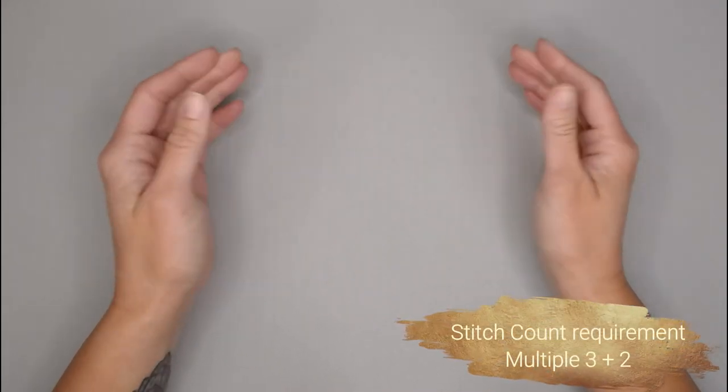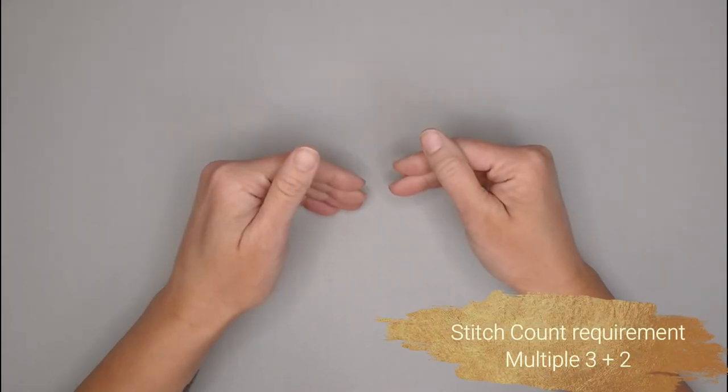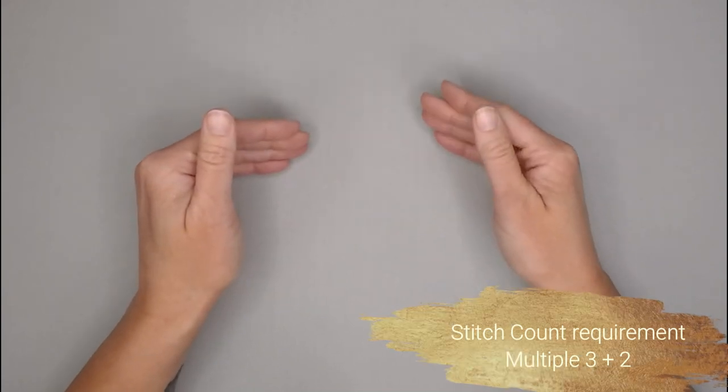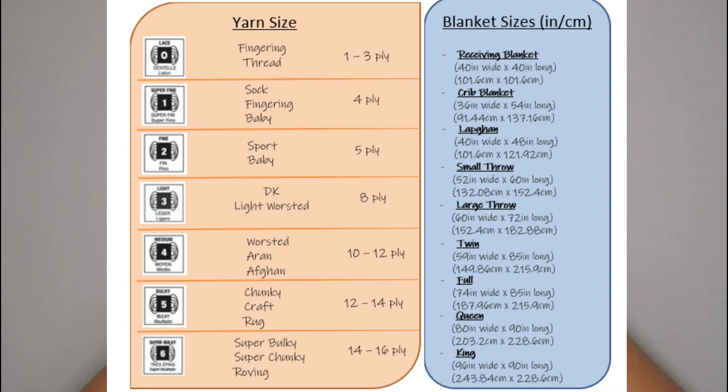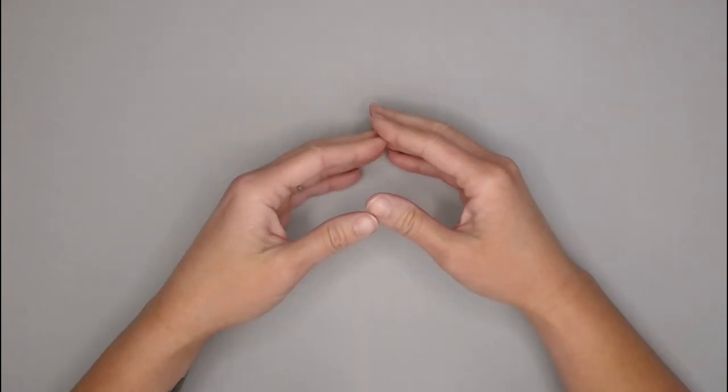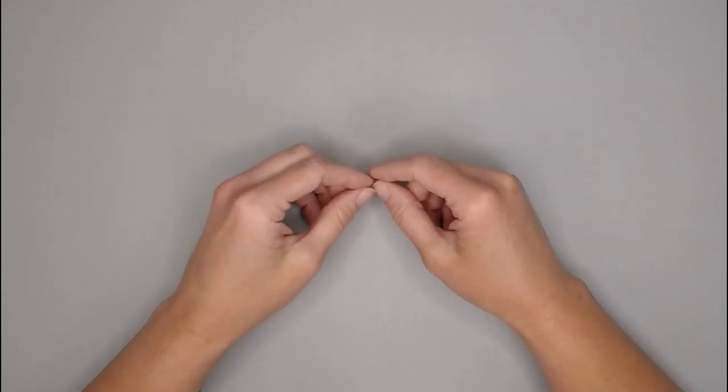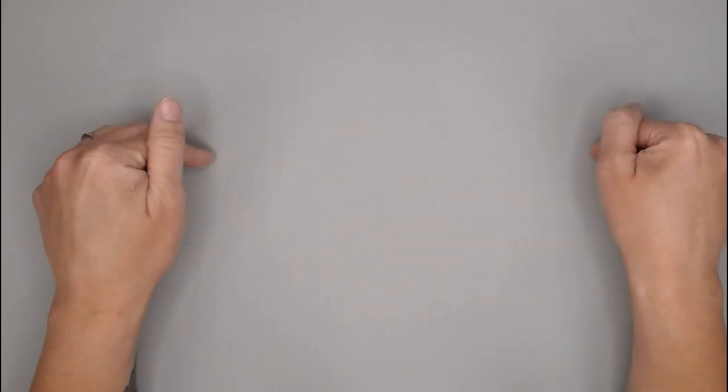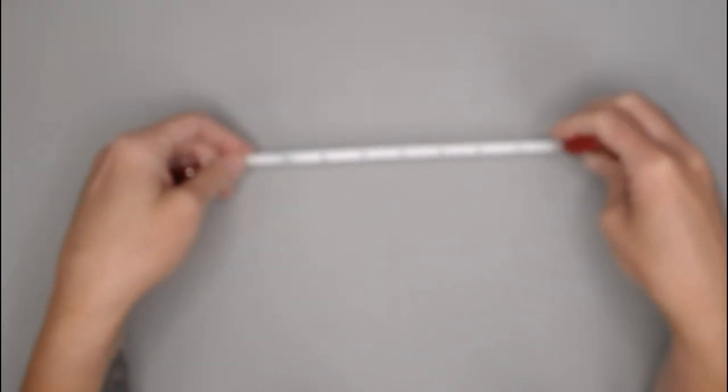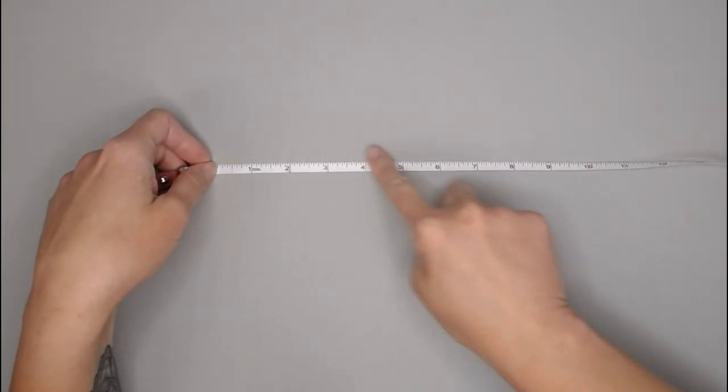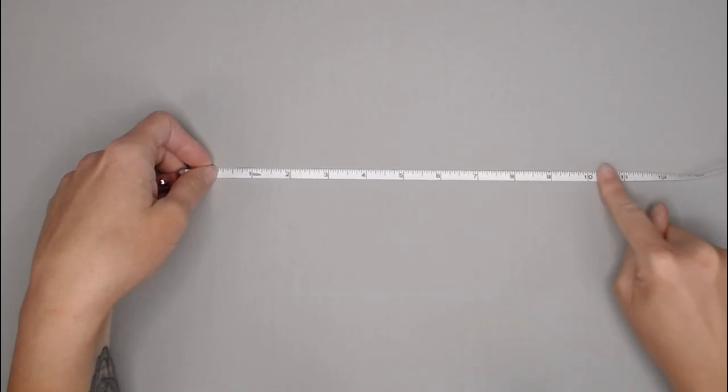There is a stitch count requirement for the waffle crochet stitch. It is in a multiple of three plus two. If you would like to make a blanket utilizing this waffle crochet stitch, I will include a chart that has all of the blankets and their dimensions to meet that blanket size requirement. What you will do is you will chain your foundation row chain in a multiple of three plus two, then grab your tape measure and measure it to make sure it has met blanket dimensions width wise.